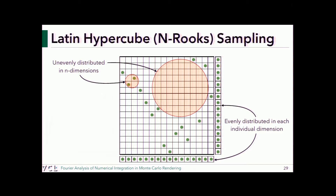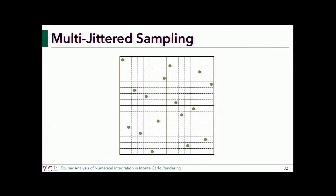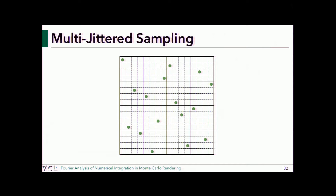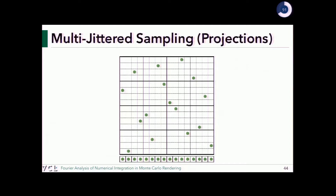Just when we thought we had an awesome solution — looking at the spectrum, n-rooks still has a lot of energy in the low frequencies, which is disappointing. So people combined jitter and n-rooks into multi-jitter: within each stratum generate one sample while satisfying the constraint that overall in the n×n checker you have n rooks. The hope is to get both the benefit of stratification and the benefit of n-rooks projection.